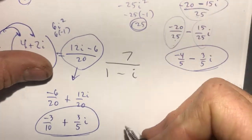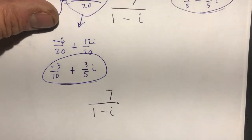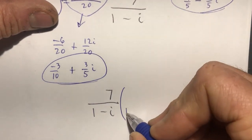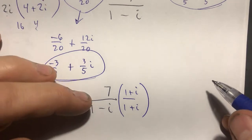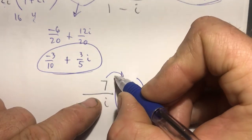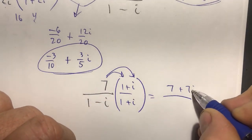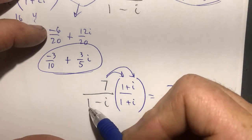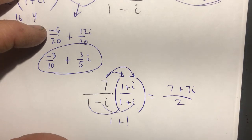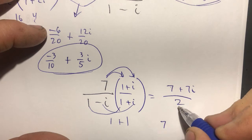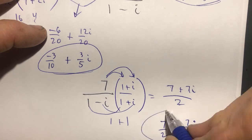Here we have 7 divided by 1 minus i. The conjugate is 1 plus i, so I multiply top and bottom by 1 plus i. On the top: 7 times 1 is 7, and 7 times i is 7i. On the bottom, conjugates: 1 times 1 is 1, 1 times 1 is 1, add them for 2. Splitting up: 7 over 2 plus 7 over 2 i.